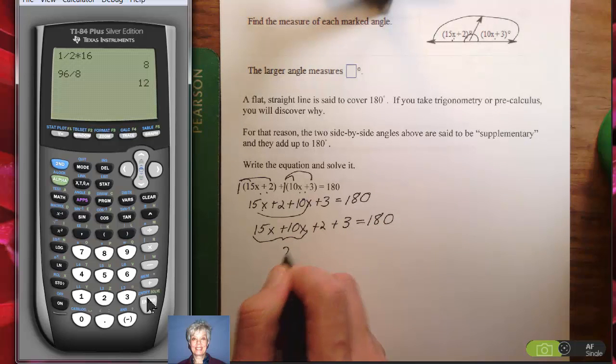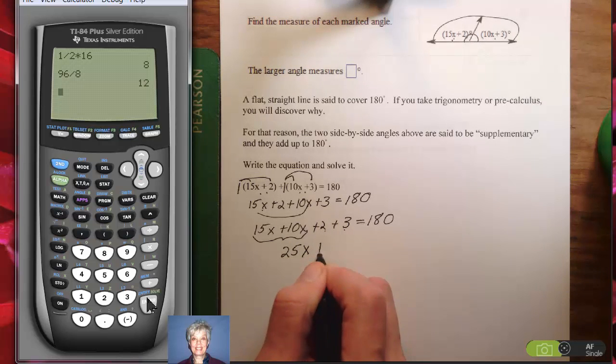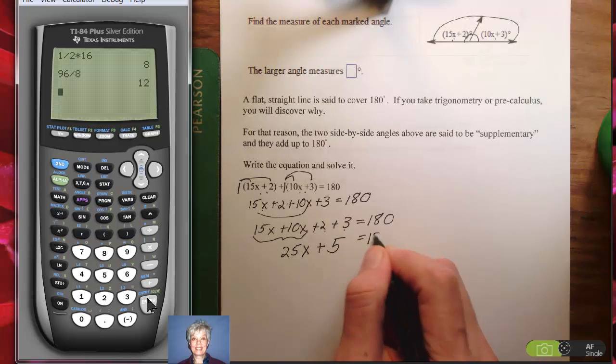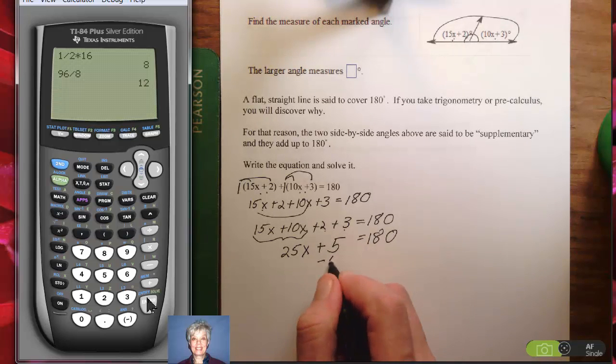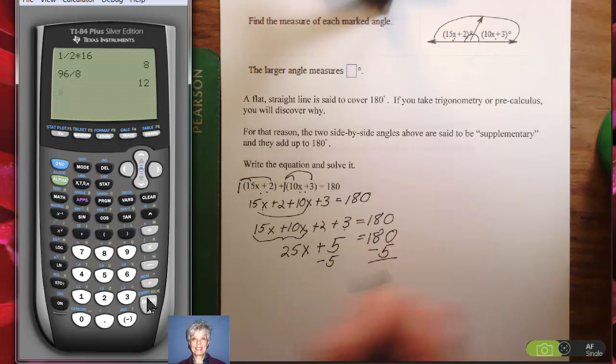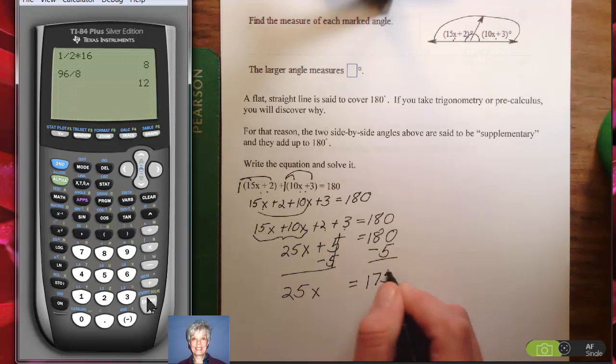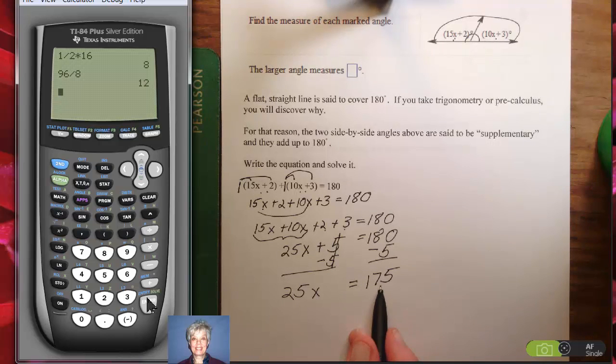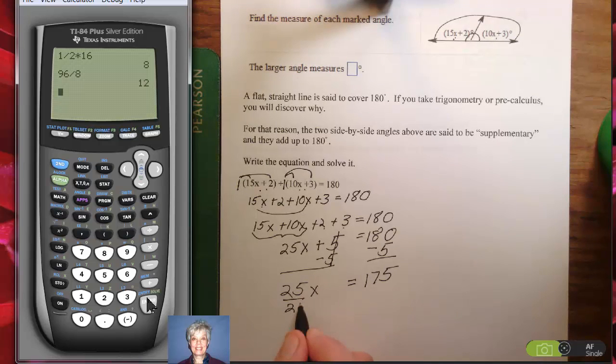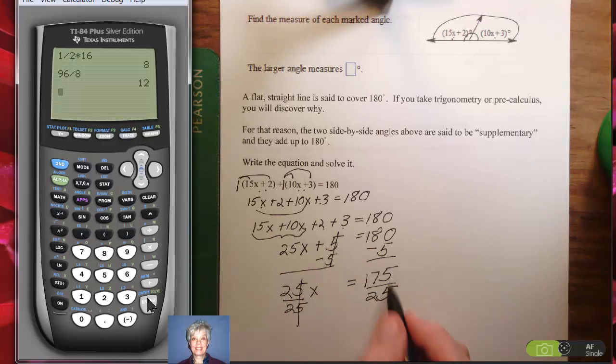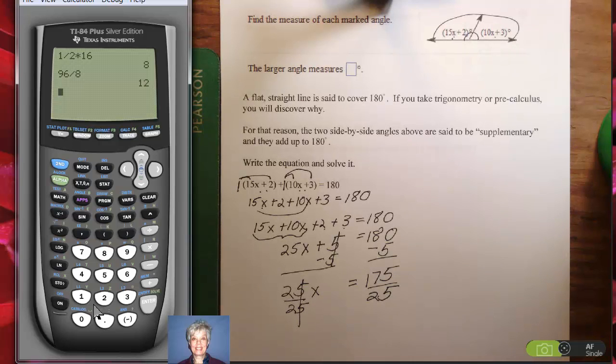15x plus 10x is 25x, and 2 plus 3 is 5. I'm going to subtract 5 from both sides. I'll have 25x equals 175, so this is 25 times x equals 175. I'm going to divide both sides by 25. And I believe 175 divided by 25 is 7, but let's make sure on the calculator. 175 divided by 25, enter. Yes, it is. It's 7. So x equals 7.